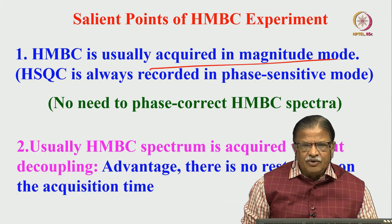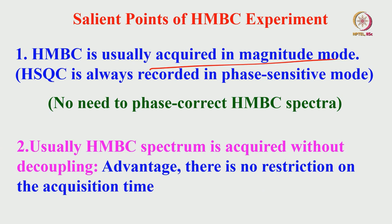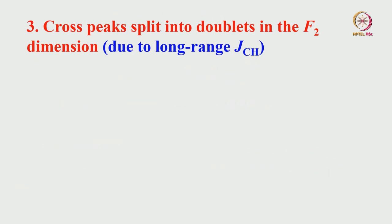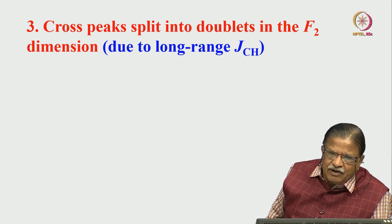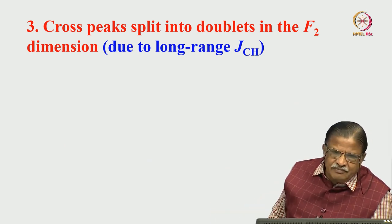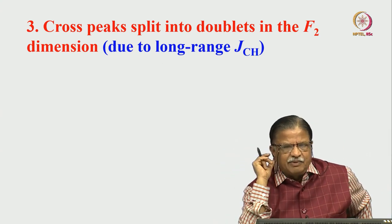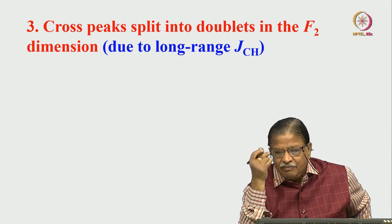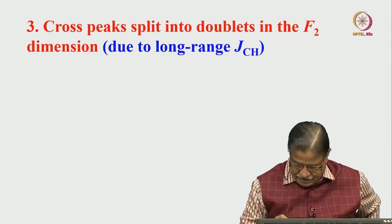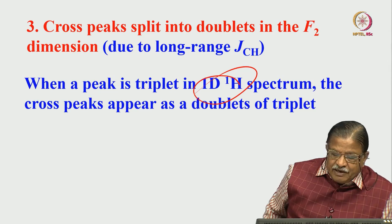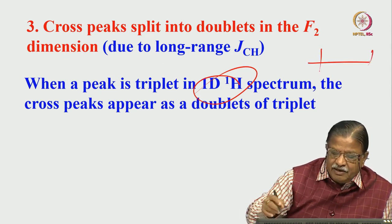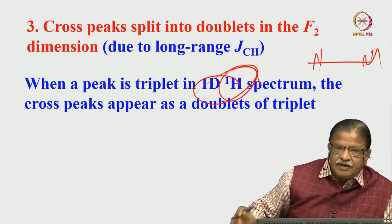HMBC is usually acquired without decoupling, because the long-range coupling is very weak and there is no advantage to decoupling. There is no restriction on acquisition time — you can acquire for a long time. Cross peaks appear as doublets in the F2 dimension because there is no decoupling, and the long-range 1J, 2J, 3J-CH couplings of the order of 8 to 10 Hz will be visible. Sometimes when a peak is a triplet in 1D NMR, the cross peaks appear as doublets of triplets.